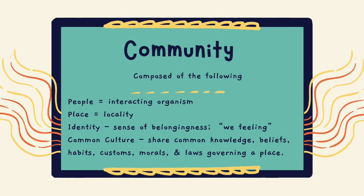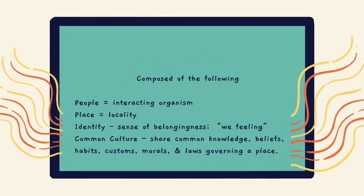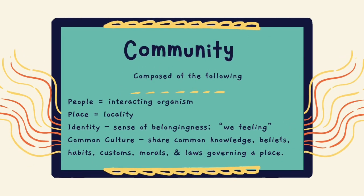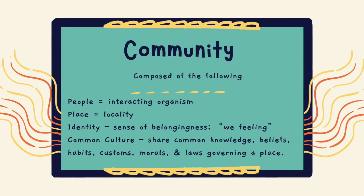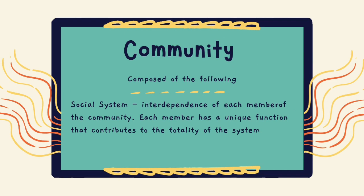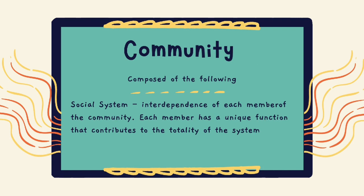The composition of a community includes: the people living in it as interacting organisms; the place or locality; the identity — meaning the sense of belongingness or 'we feeling' of each member; common culture, in which they share common knowledge, beliefs, habits, customs, morals, and laws governing a place; and the social system, which reflects the interdependence of each member, each having a unique function that contributes to the totality of the system.